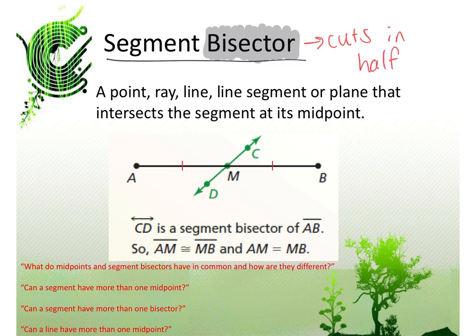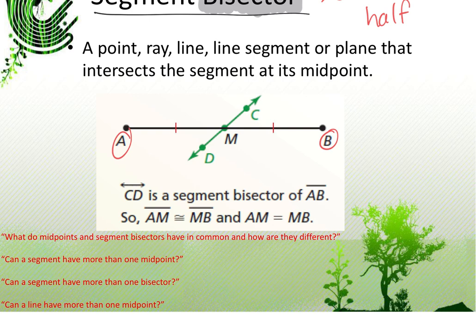If you have a segment AB, the segment bisector is whatever cuts it down the middle. In this example, the line CD cuts segment AB in half — it is a segment bisector. Another segment bisector would be the point M. If CD were a ray, that ray would also be a segment bisector.